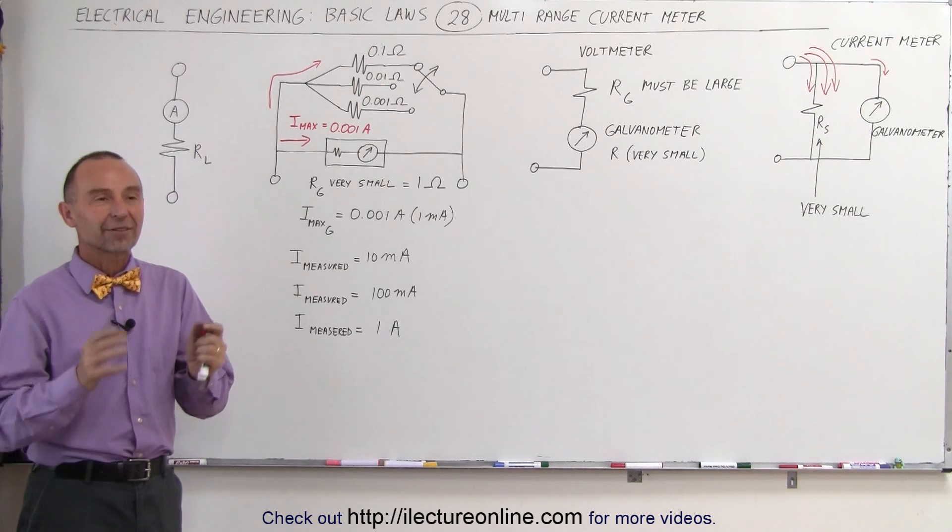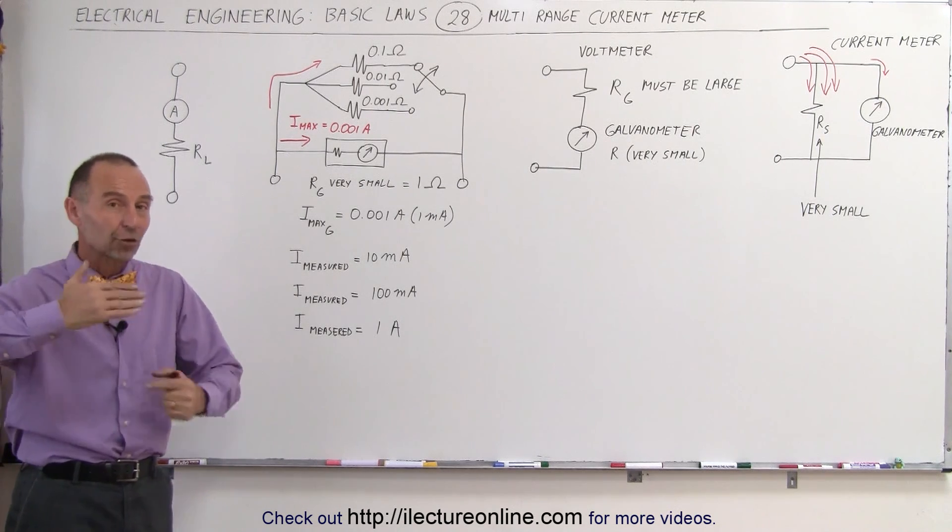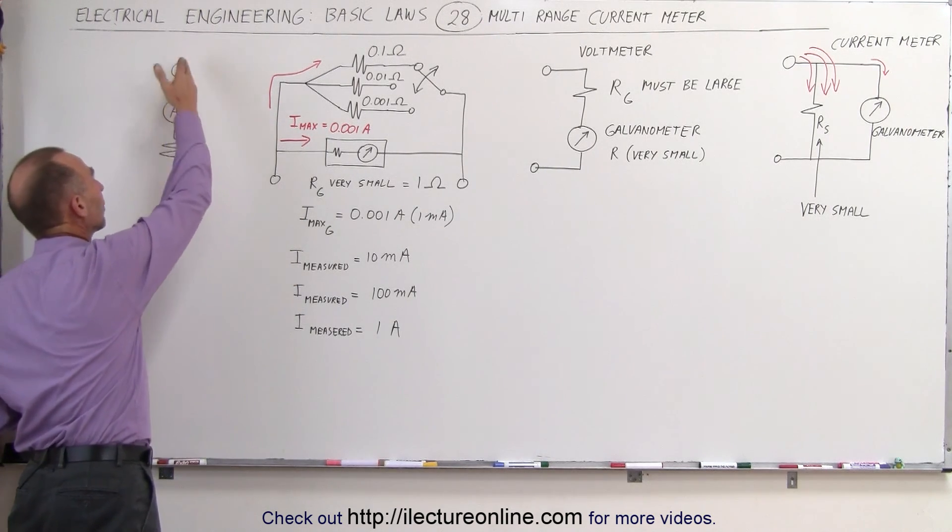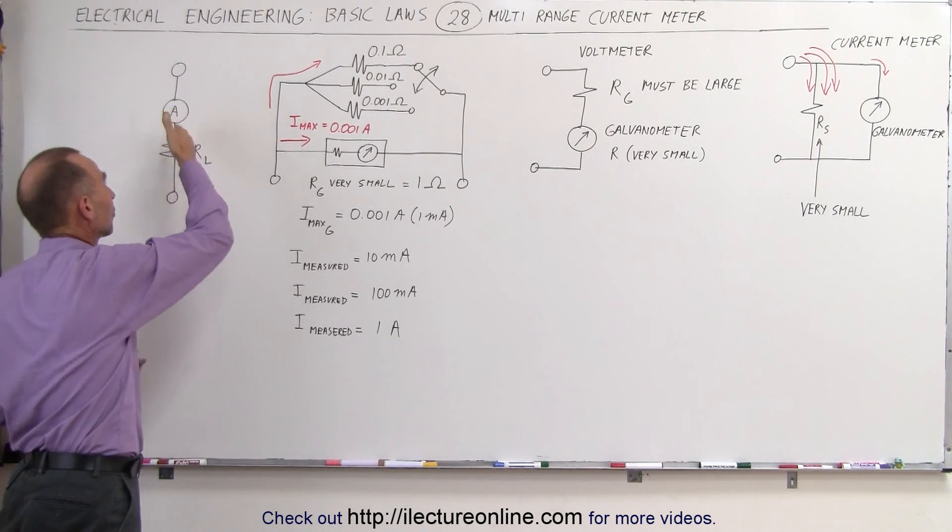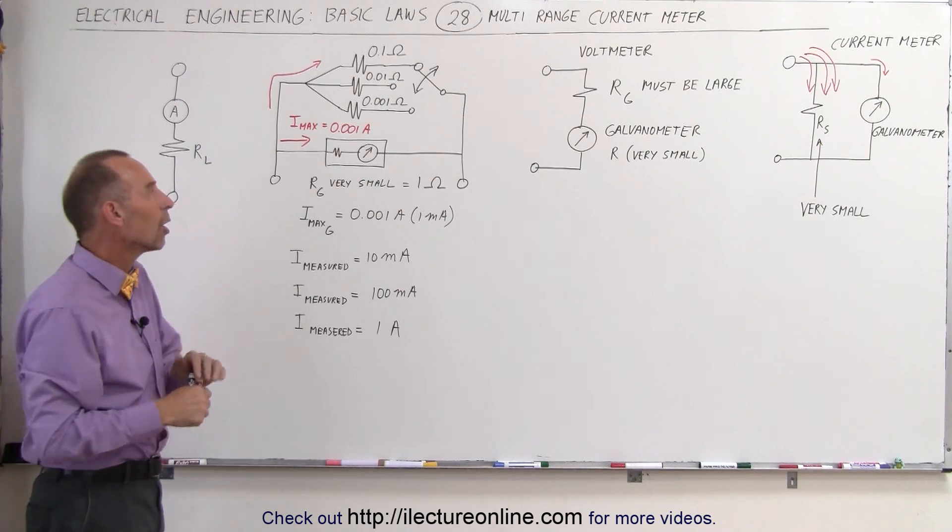It would be difficult to have a single current meter that has no settings on it to be able to measure a large range of currents. For example, we want to be able to place a current meter in the circuit that we're trying to measure the current of. And if the current meter affects the circuit too much, then we can't use it. Then it's unusable. Then we have wrong readings.